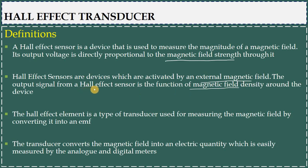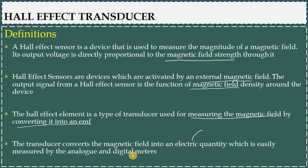That force results in a variation of magnetic field density around the device, which is activated by an external magnetic field. In other words, the Hall Effect transducer converts magnetic quantity to an electrical quantity — specifically, it generates an exact EMF corresponding to the applied magnetic field.